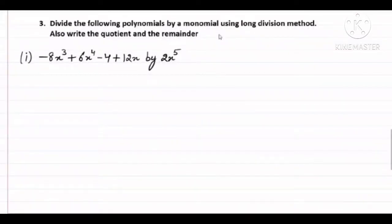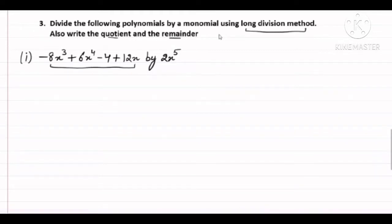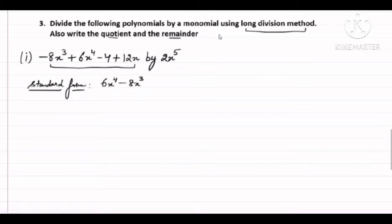Similarly, you can try the remaining parts of question number 2. Now see question number 3. The question is: divide the following polynomials by a monomial using the long division method. This is a very important part of this chapter — understand it carefully. They have also asked to write the quotient and the remainder. So first, the polynomial you have, you will write it in standard form. Remember this — in the paper there are marks for writing the standard form too. The standard form: first write the maximum power, descending order — that is 6x⁴, then minus 8x³, then there is no x² term, so directly 12x, and then the constant term minus 4.